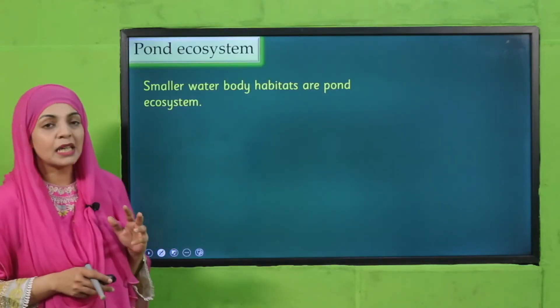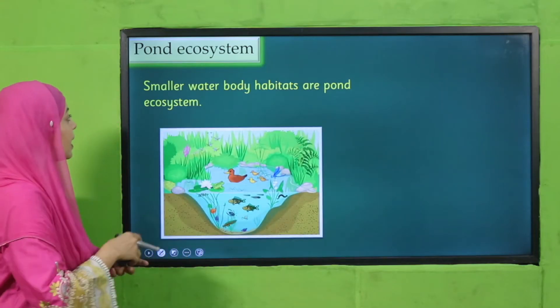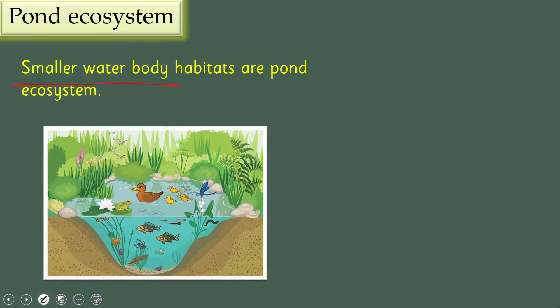Basically, what is a pond? A pond is a smaller water body. Smaller water body habitats are what we call a pond ecosystem.